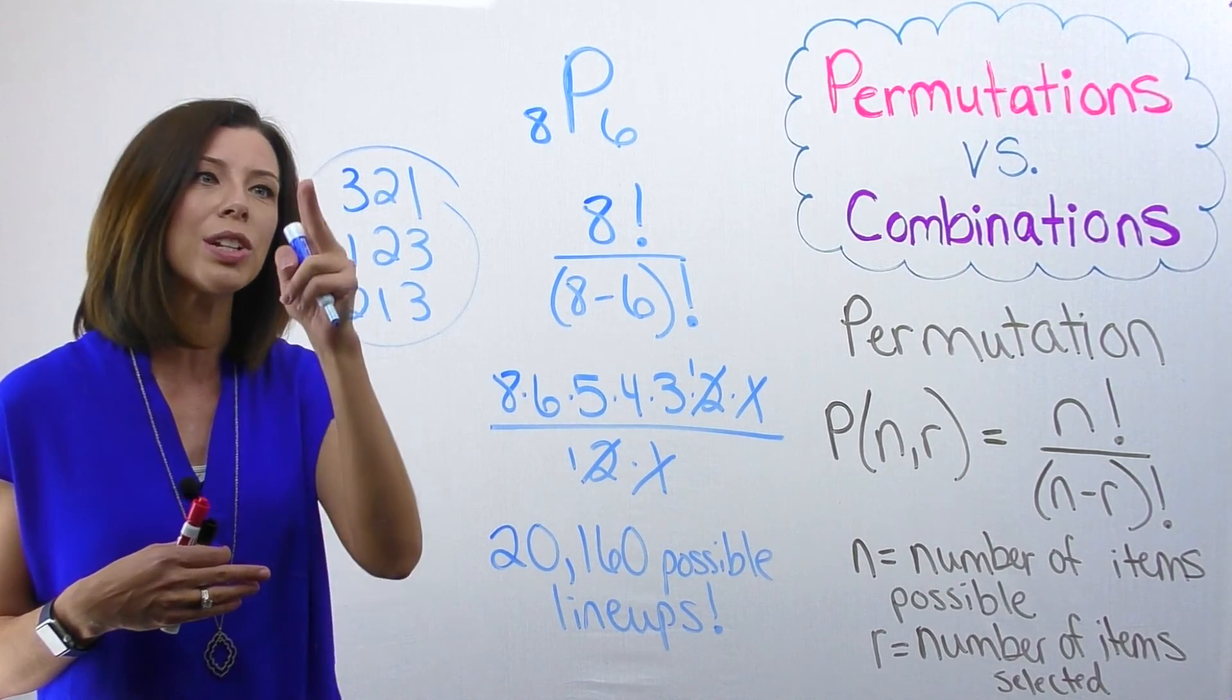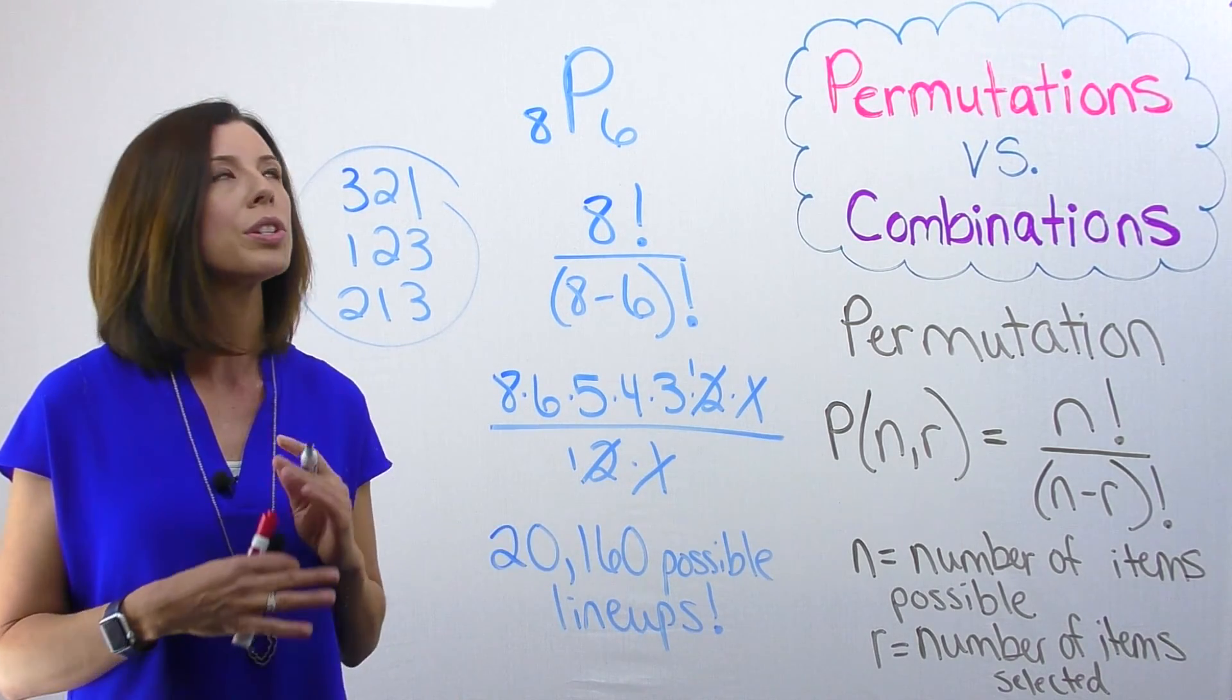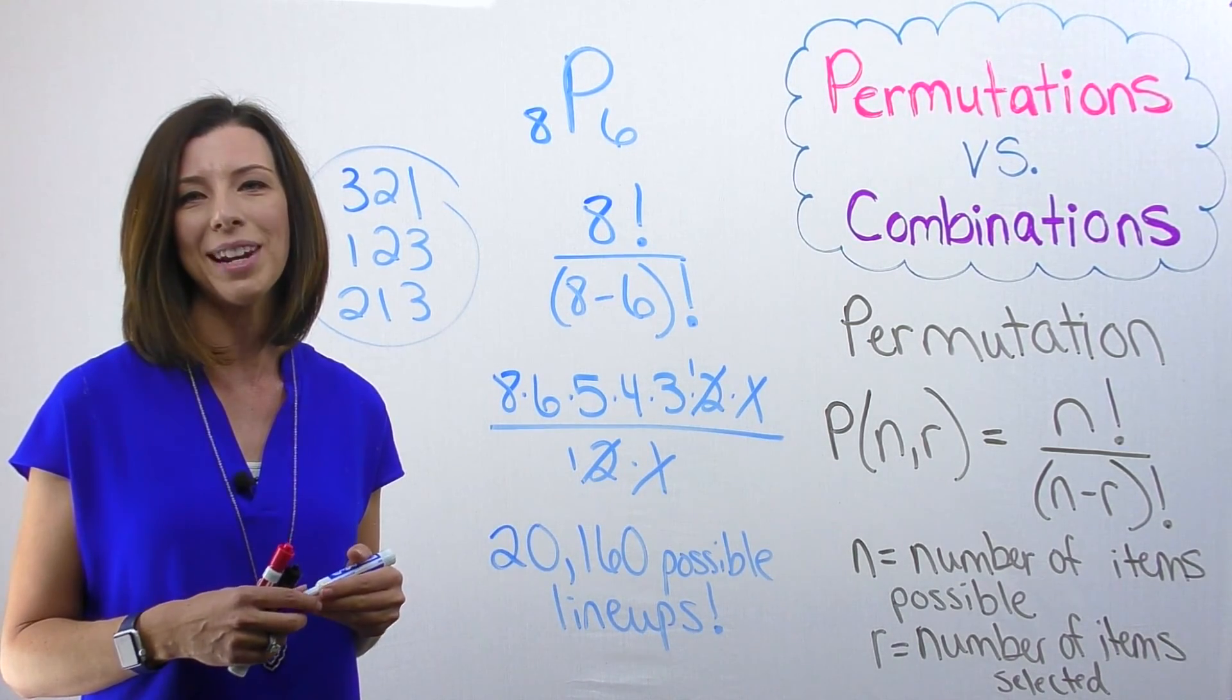However, in permutations, you can see that that would be three different permutations. This is why the amount of permutations is always going to be greater than combinations.